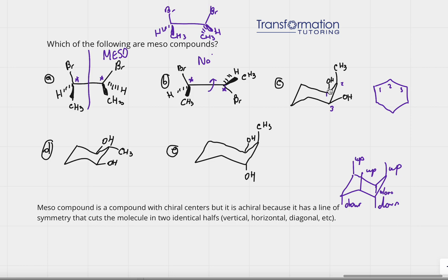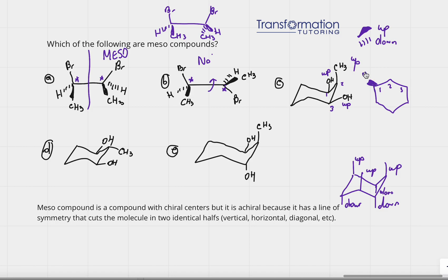Looking at molecule C on the chair: carbon one's substituent is up, carbon two's substituent is up, and carbon three's OH is pointing down — so that must be up as well, actually let me confirm — it is up. When converting from the chair back to the flat cyclohexane, substituents going up become wedges and substituents going down become dashes. So carbon one gets OH on a wedge, carbon two gets CH3 on a wedge, and carbon three gets OH on a wedge.